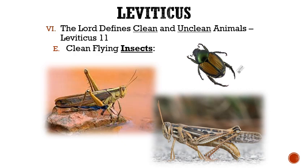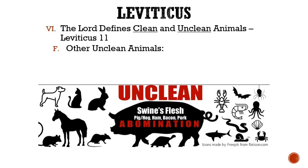Letter E: The clean flying insects are listed. These clean flying insects that they could eat were the locust, the beetle, and the grasshopper. Letter F: Other unclean animals include the weasel, the mouse, tortoise, ferrets, chameleons, lizards, snails, and even moles. In this section we find out that even touching these unclean animals was considered an abomination.